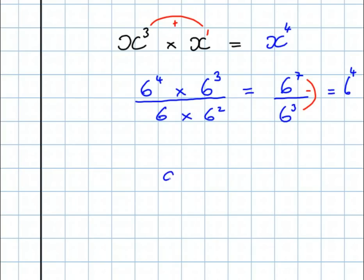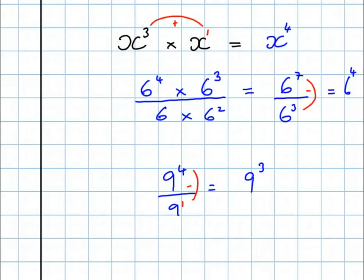And the final one then: what would 9 to the power 4 over 9 be equal to? Remember, there's a power 1 there. So remember, we subtract. That's going to be 9 to the power 4 take away 1 — 9 to the power 3. OK, those are the basic rules of indices.